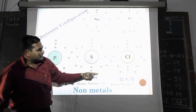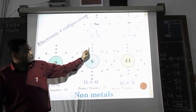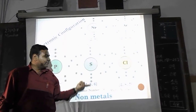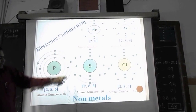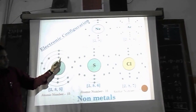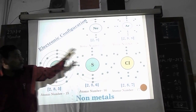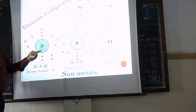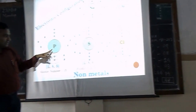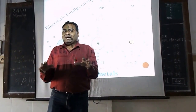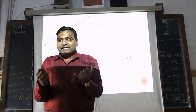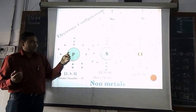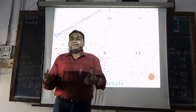Similarly, sulfur has atomic number 16 and electronic configuration 2-8-6. Its outermost orbit has 6 electrons, so it would have to lose all 6 to get a neon-like configuration, or gain 2 electrons. It easily gains 2 electrons and converts into S²⁻. Phosphorus has 5 electrons in its outermost orbit. It would have to lose all 5 to get a neon configuration, or gain 3 electrons to become like argon. So it gains 3 and converts into P³⁻. Phosphorus, sulfur and chlorine all gain electrons, giving them non-metallic properties.